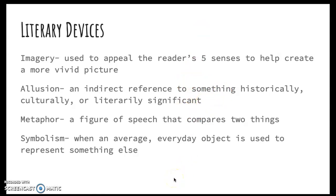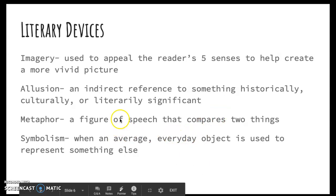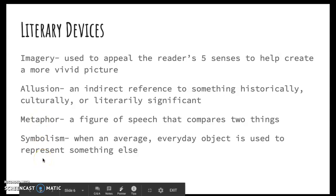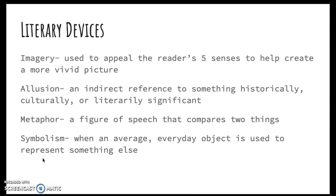A metaphor — and I know you guys know what these are, but just to recap — is a figure of speech that compares two things, for the most part using like or as. There is a very large and extended metaphor in the poem that we're going to be reading. And finally, we've got symbolism — we've talked about it before, but to remind you, it's when an everyday object is used to represent something else. For example, the dove is used to represent peace, and the stereotypical heart is used to represent love.